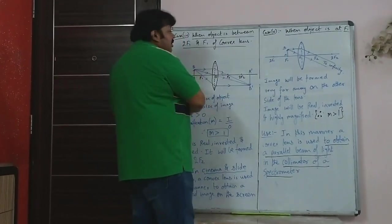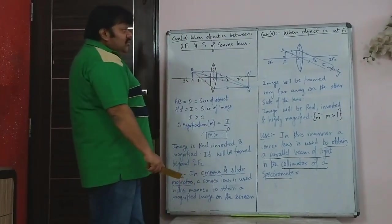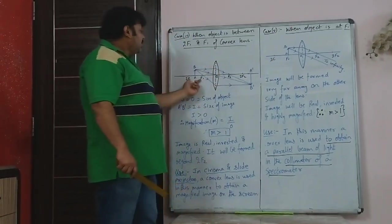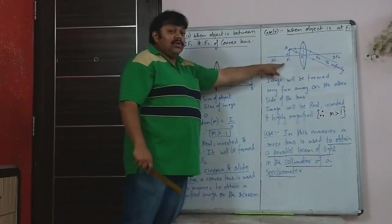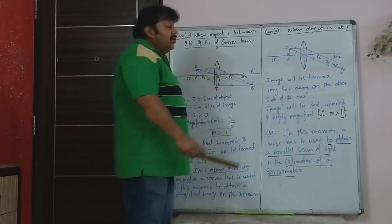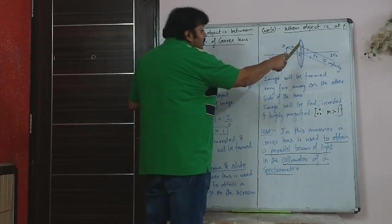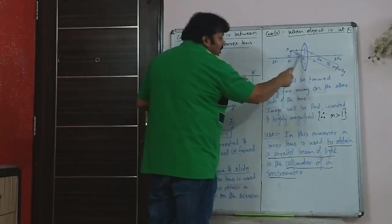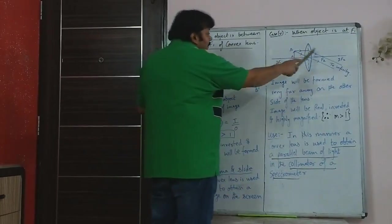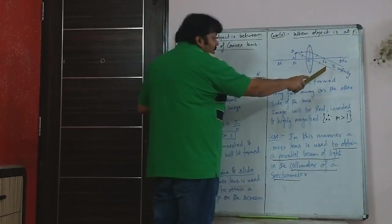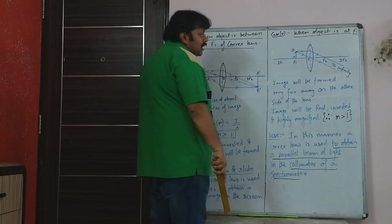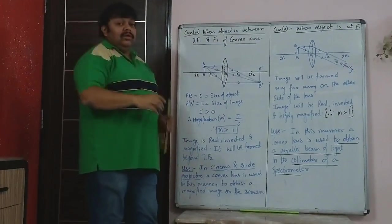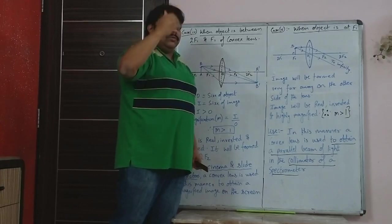When the object is at F1, one ray parallel to the principal axis after refraction will emerge through F2, and the second ray passing through the optical center will go straight undeviated. In this case, the two emergent rays are parallel to the principal axis — they are parallel to each other. Parallel rays are assumed to meet at infinity. No one has seen infinity, but just as rays from the sun are parallel because it is very far off, these parallel rays will meet at a very far-off distance.